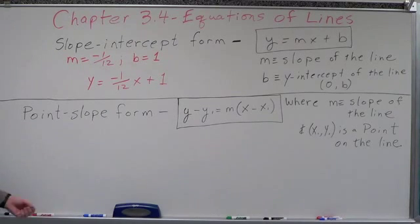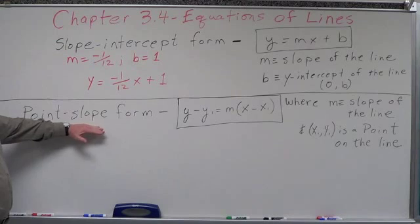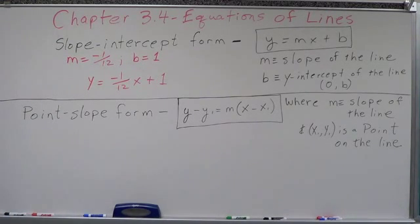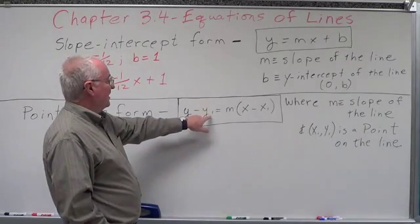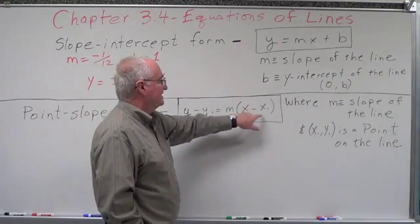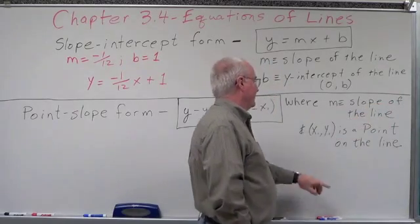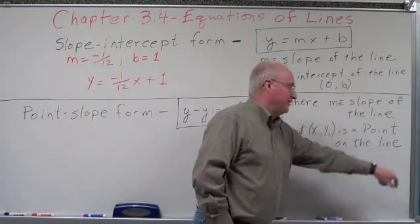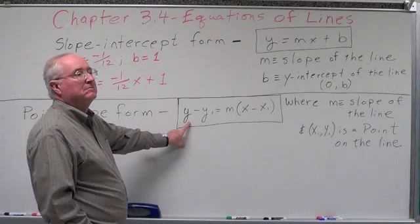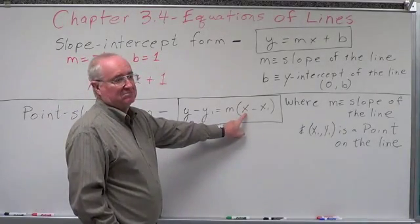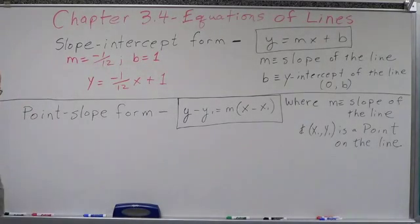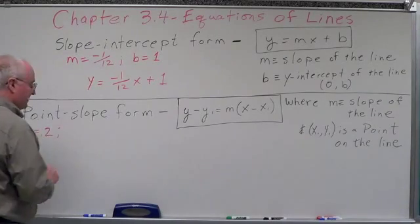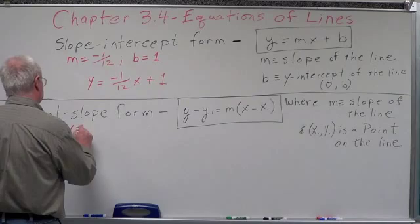Now let's look at point-slope form. Point-slope form is very similar, except they're going to give us a point and a slope. If we know a point and a slope on a line, we can set up an equation and convert it to slope-intercept form. It looks like this: y minus y-sub-one equals m times the quantity x minus x-sub-one, where m is the slope and x₁, y₁ is a point on the line. Let's try some samples. Let's say the slope is equal to two and they give us a point of three, one.